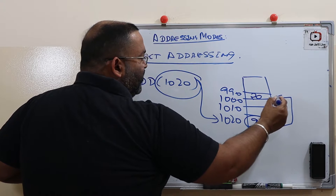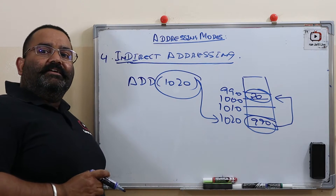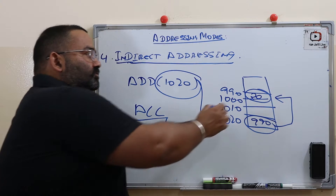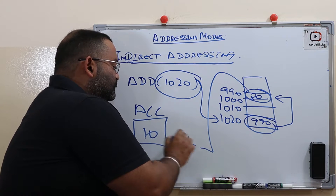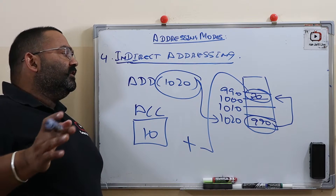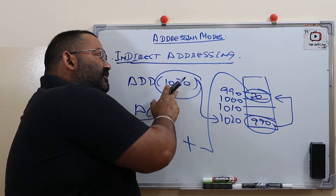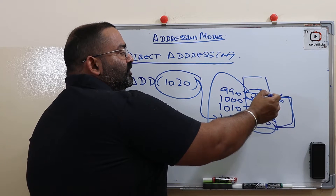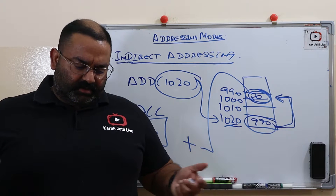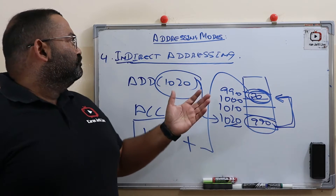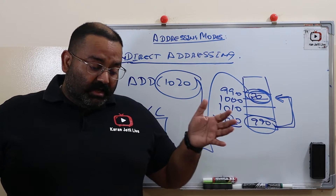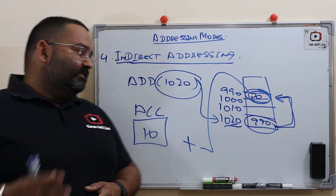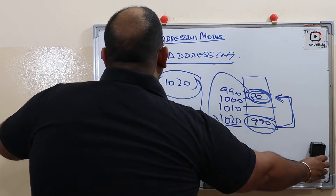So in indirect addressing, from memory location 1020 we get the address 990, then we fetch the data (20) from location 990 and add it to the accumulator. In high-level languages like C, this is called pointer addressing, and in assembly language it is called indirect addressing.